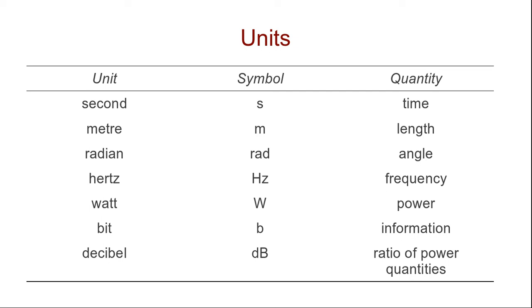With data communications the main purpose is to get information from one point to another. To measure the amount of information we use bits, using a lowercase b as the symbol in many cases.